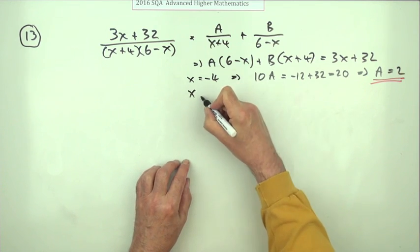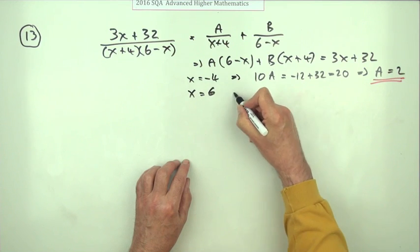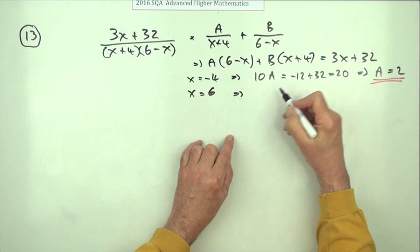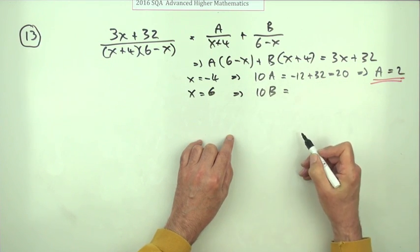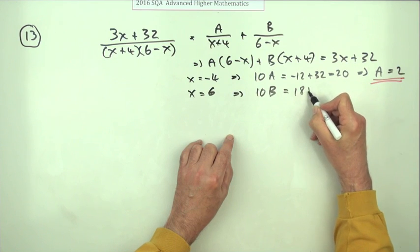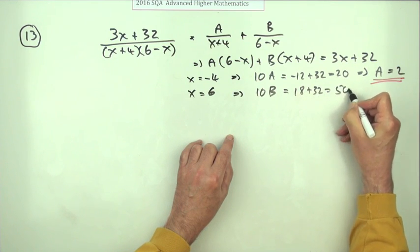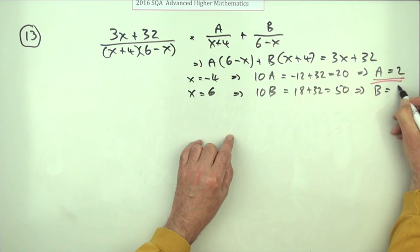Now knock this out with a 6. x equals 6 means that you're left with B and a 6 means that's also a 10. 10B equals and that'll be an 18 and a 32 which is a 50 which means that B is 5.